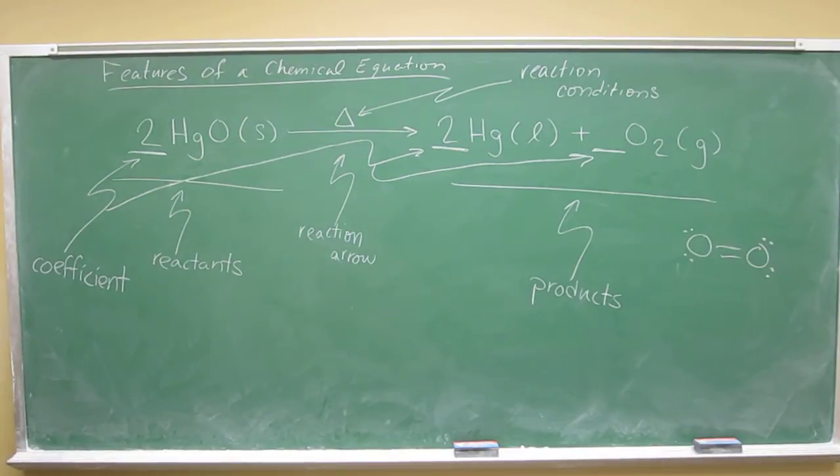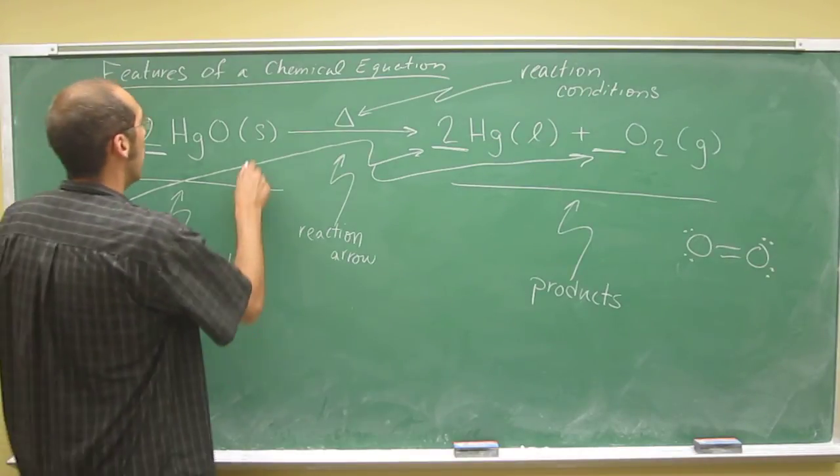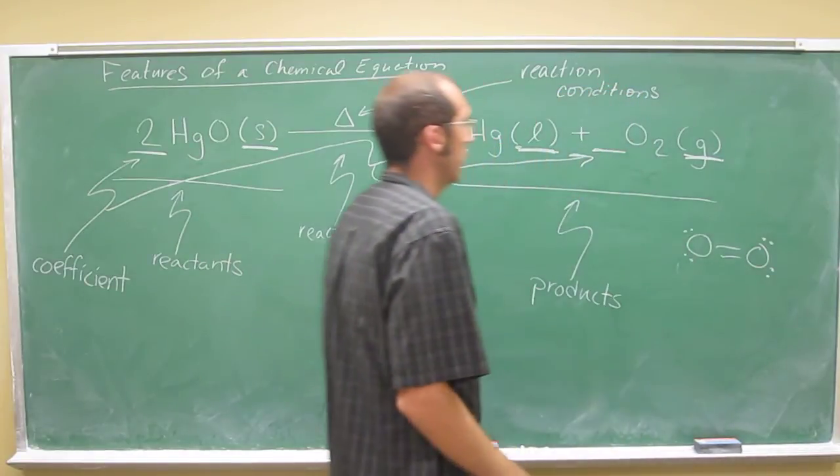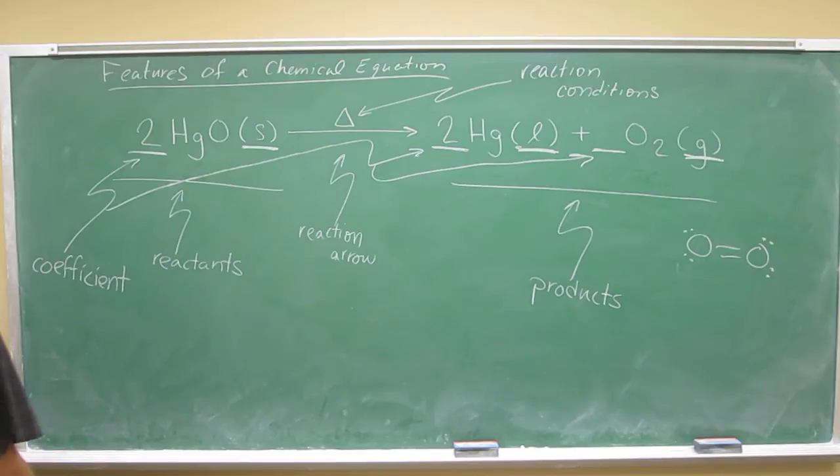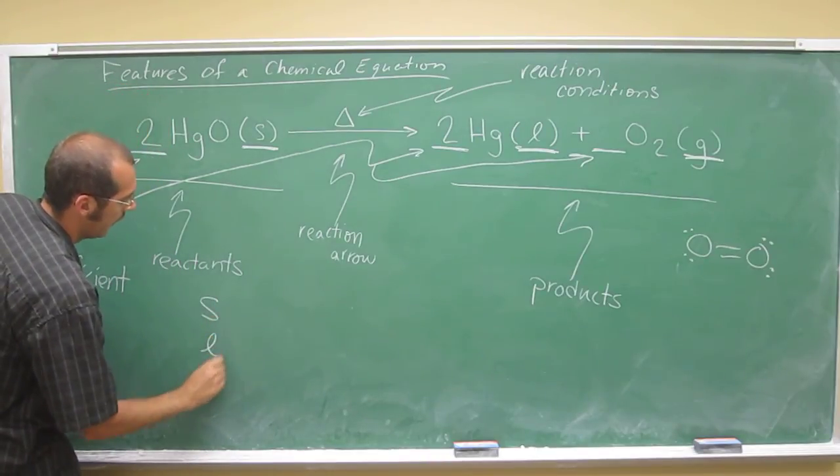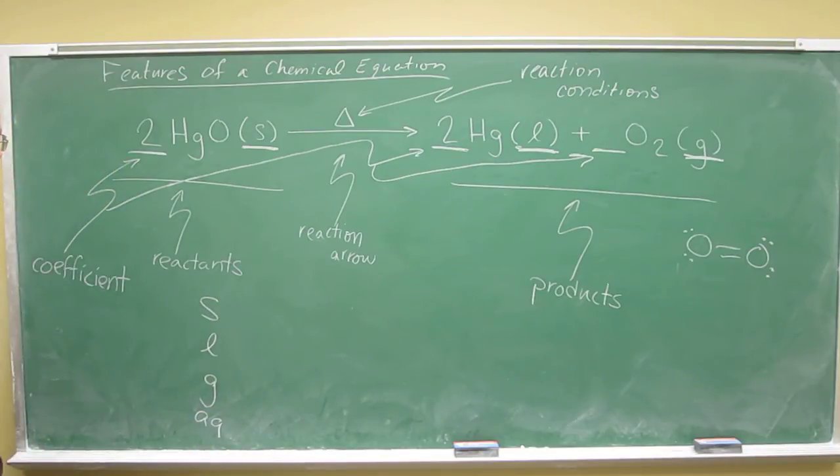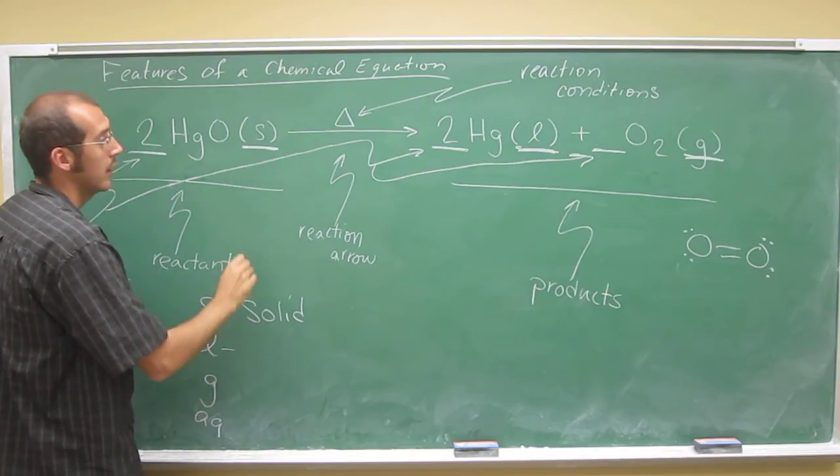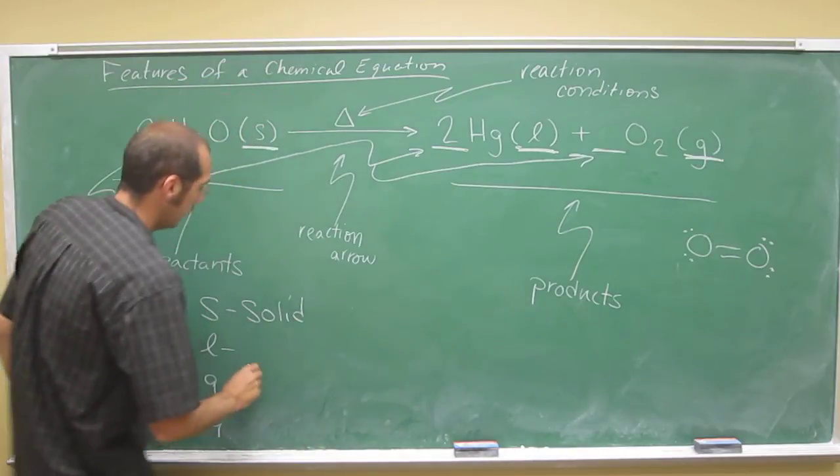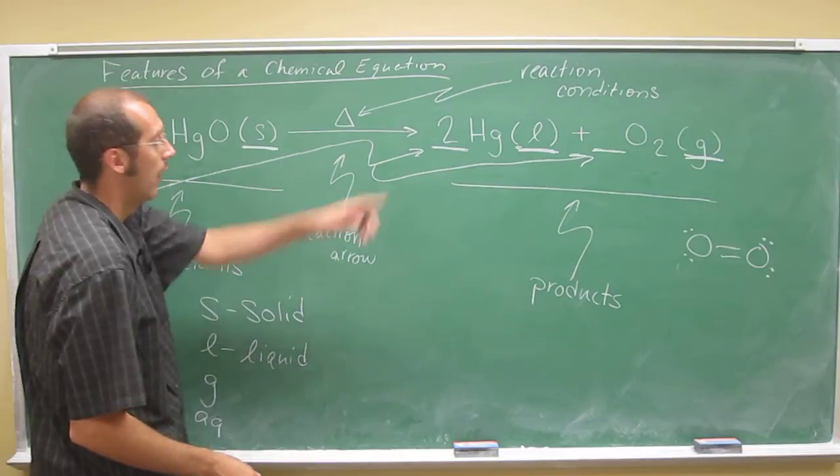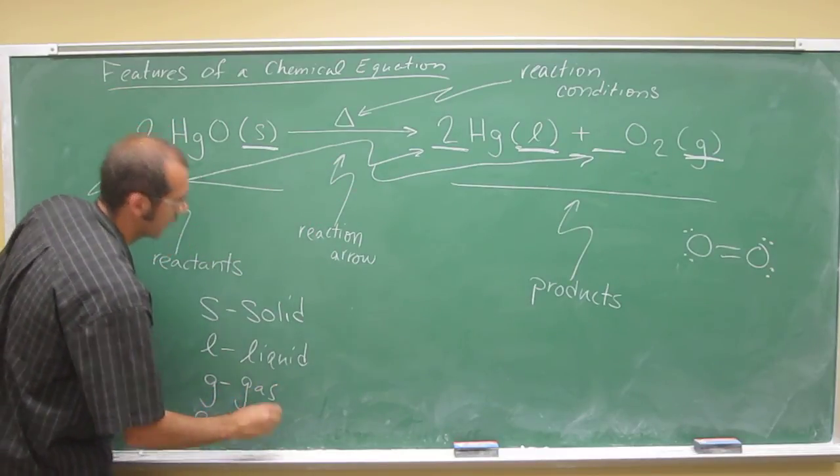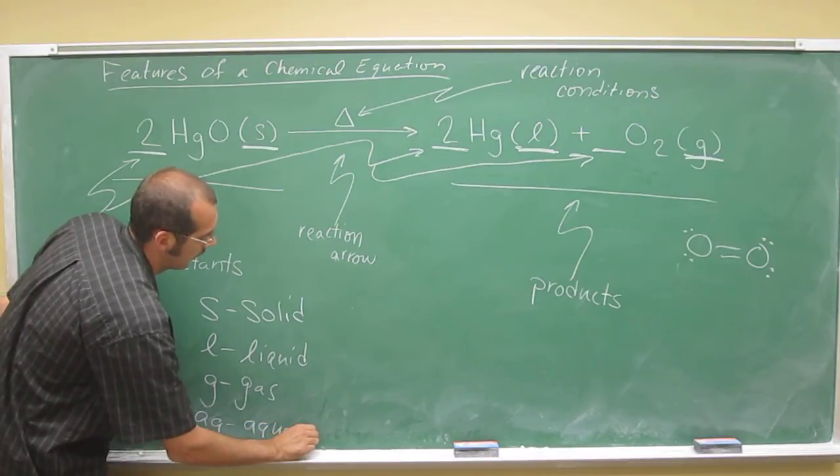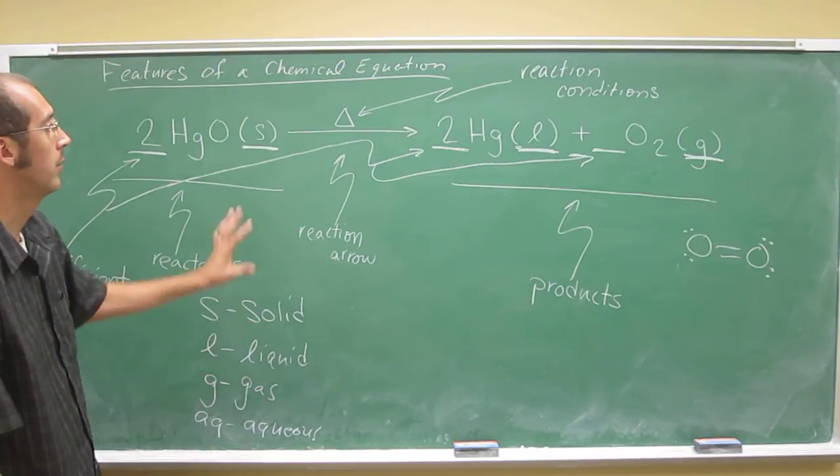And I guess the last thing that I can see in this reaction equation that we haven't gone over are these things. So after each particle in the reaction equation, there's this parentheses with a letter inside of it. And those letters are either going to be S, L, G, or AQ. S stands for solid. So mercury 2 oxide is a solid. When it decomposes, it forms mercury metal, which is a liquid, and oxygen O2, which is a gas. There's another one that isn't shown in this equation. It's called aqueous. And this is when you form a solution where water is the solvent. We'll talk more about that later.